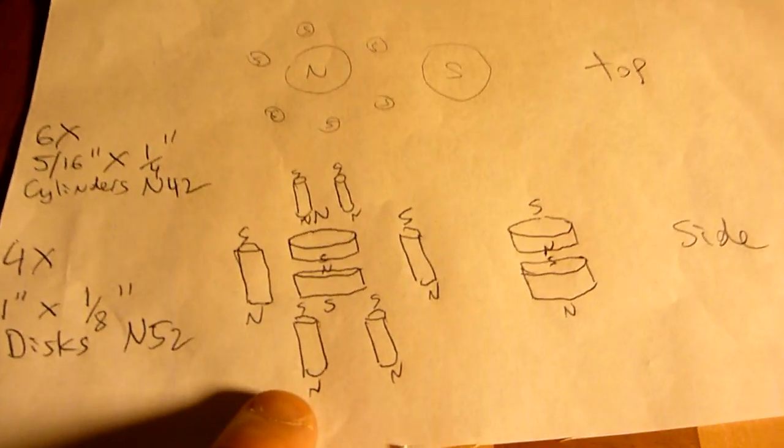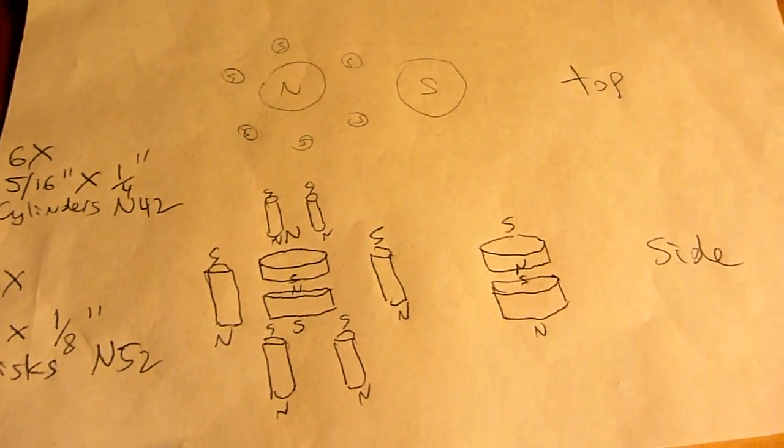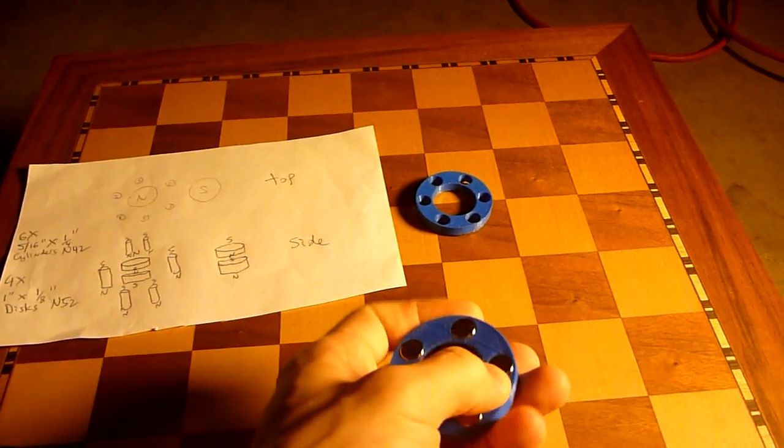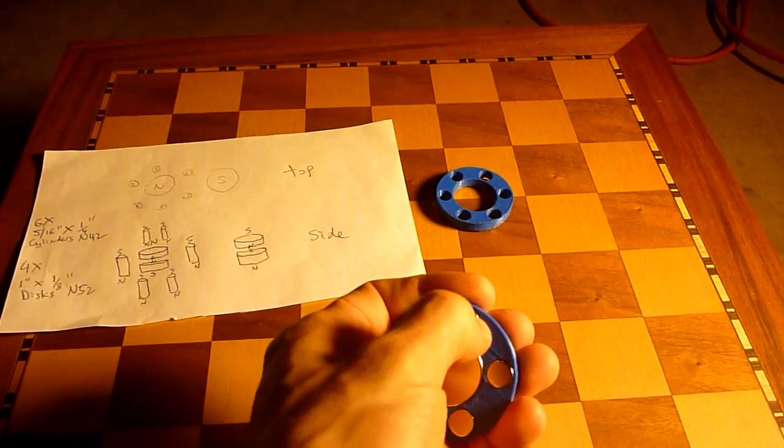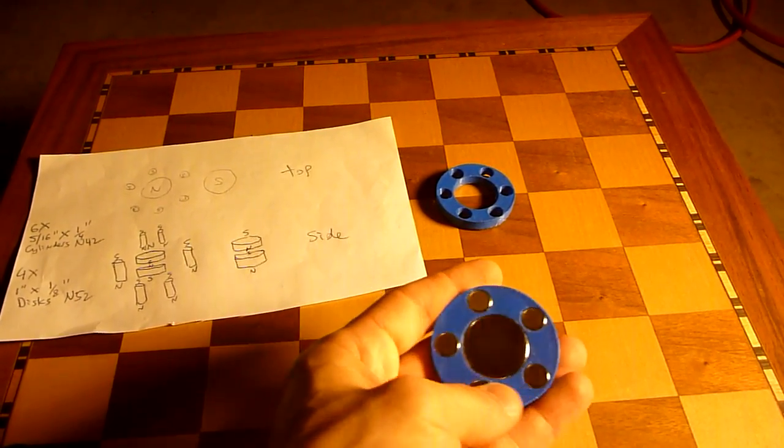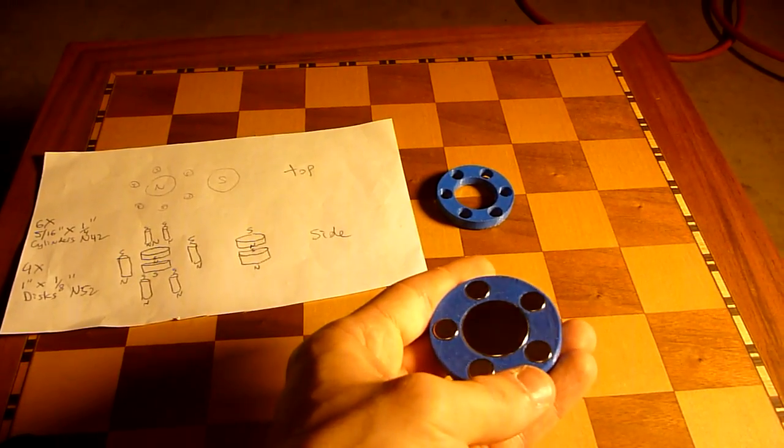And this is what didn't work. So you have to make sure you get magnets that are small enough. Because this construct doesn't work. Because the magnets in the perimeter are too large. So you won't achieve the effect.